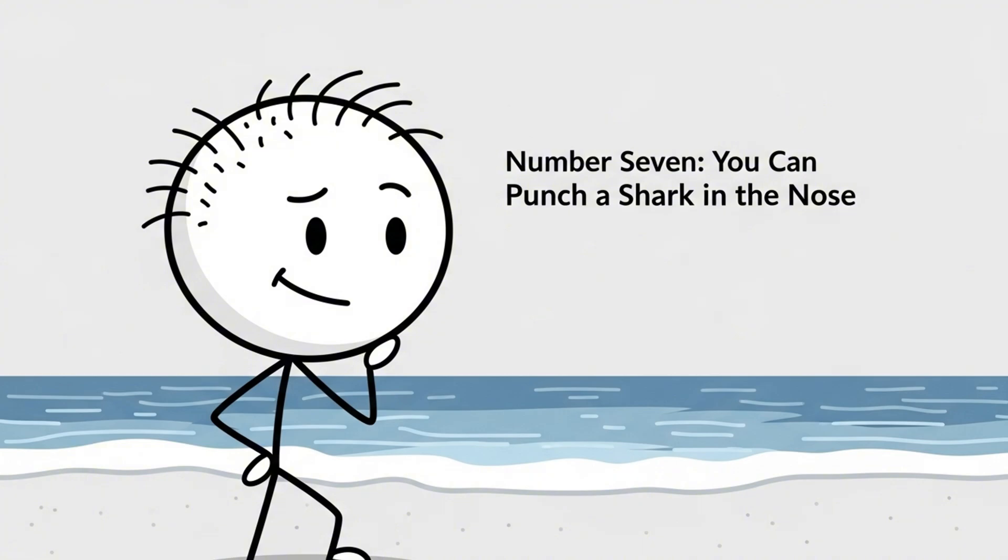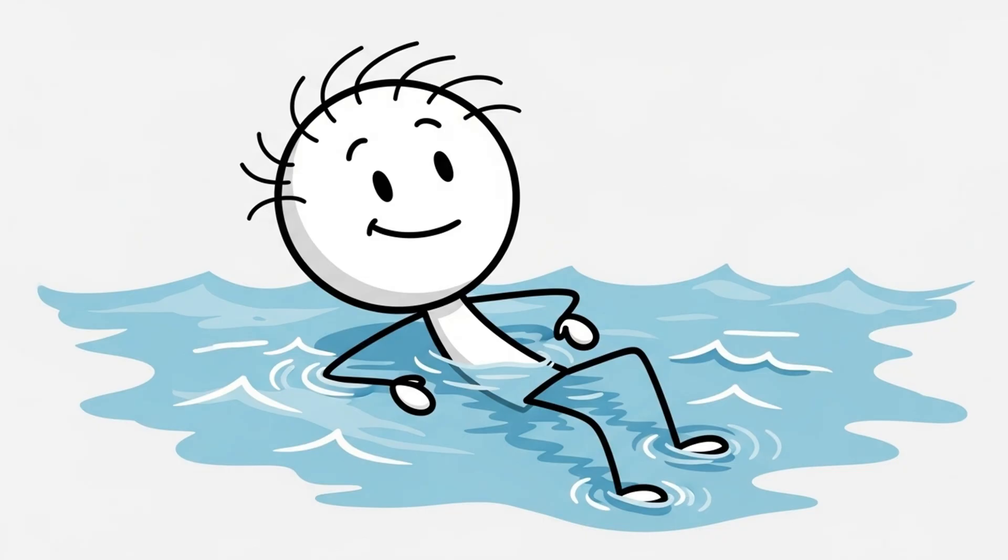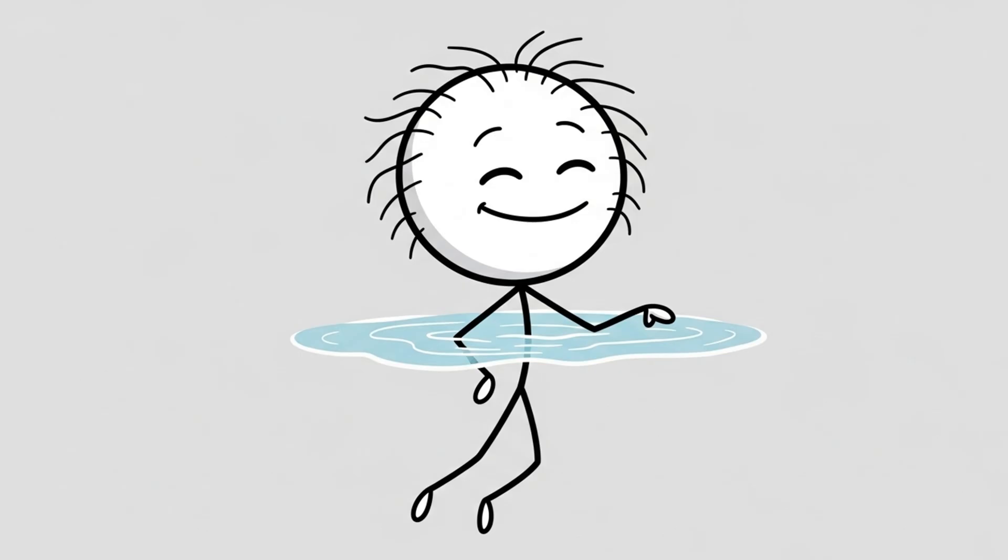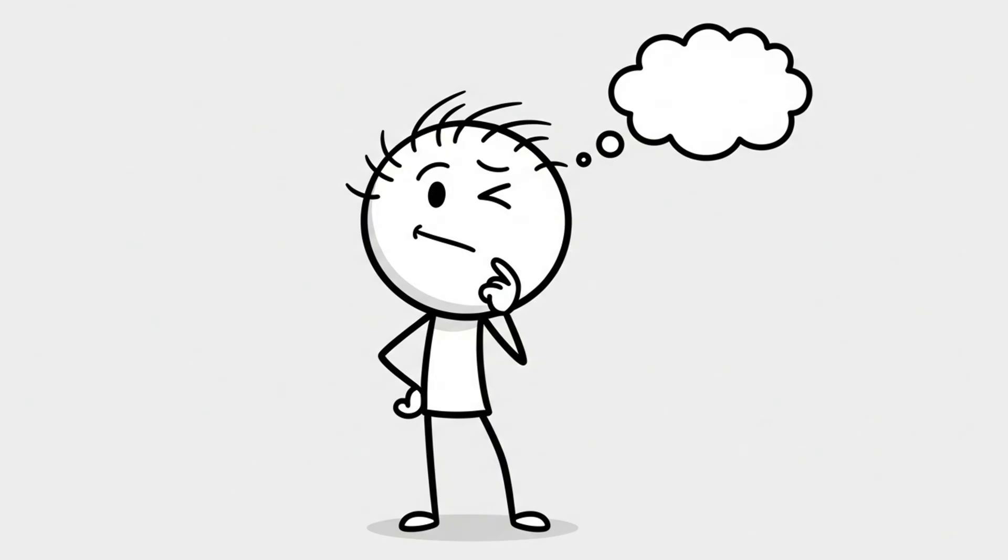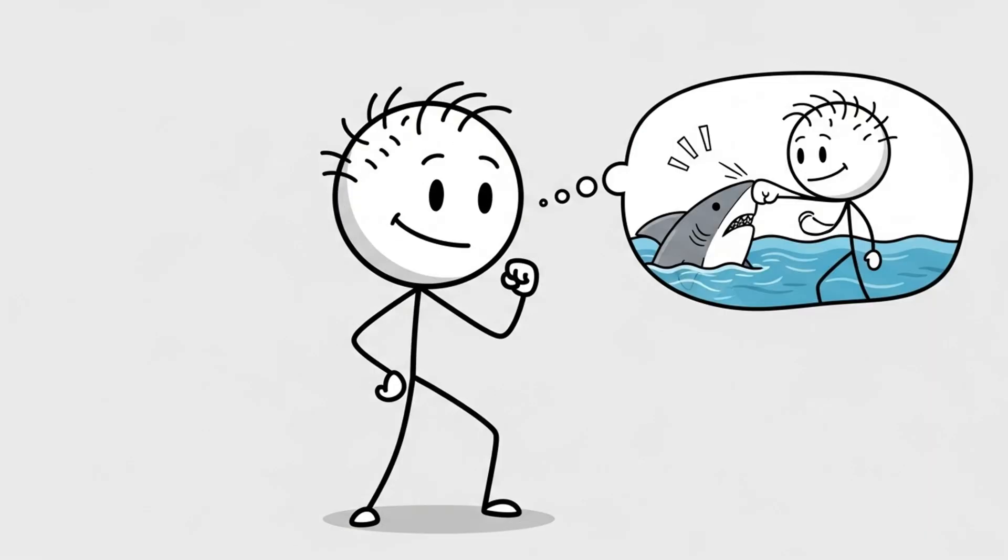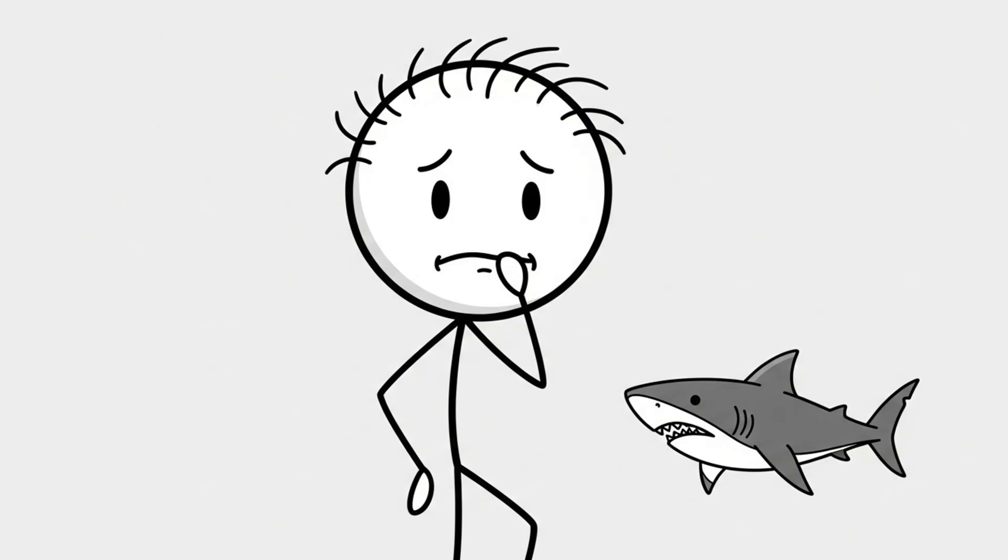Number 7. You can punch a shark in the nose. You're swimming peacefully. Life is good. Then, jaw's theme intensifies. A shark appears. Time slows down. You remember what that one friend said, if a shark attacks, punch it in the nose. Yeah, about that.